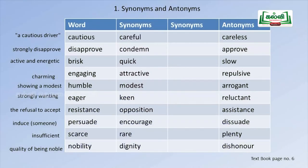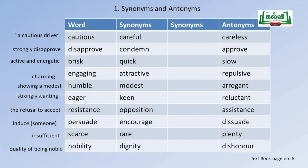Let's start from the first word — 'cautious.' As you remember, the narrator was cautioned by the driver in 'Two Gentlemen of Verona.' Cautious means careful, so the synonym is 'careful.' The second word is 'disapprove' — I strongly disapprove — the synonym is 'condemn.' The third word is 'brisk,' which means active and energetic, so the synonym can be 'active' or 'quick.'